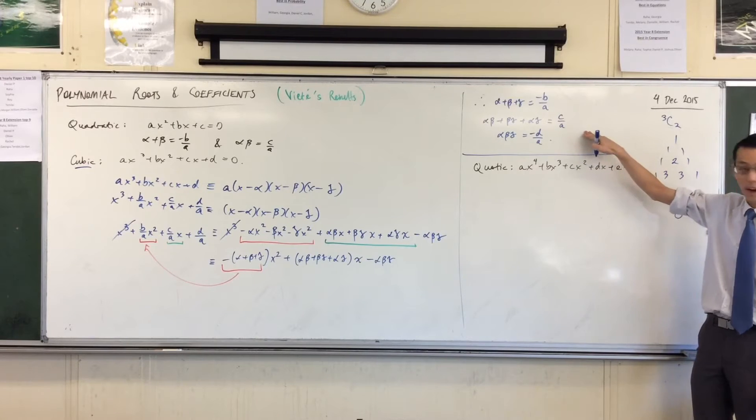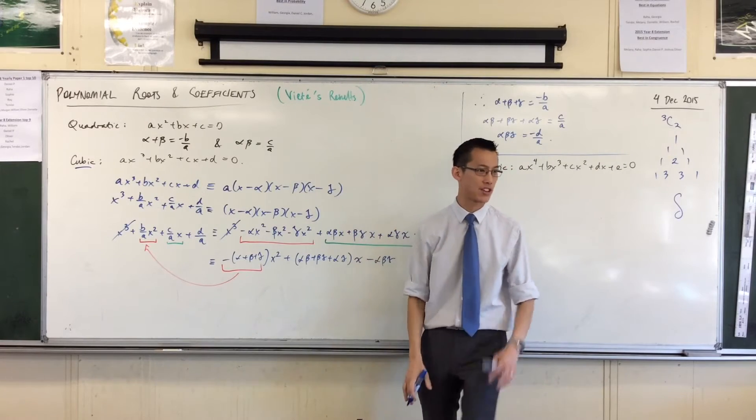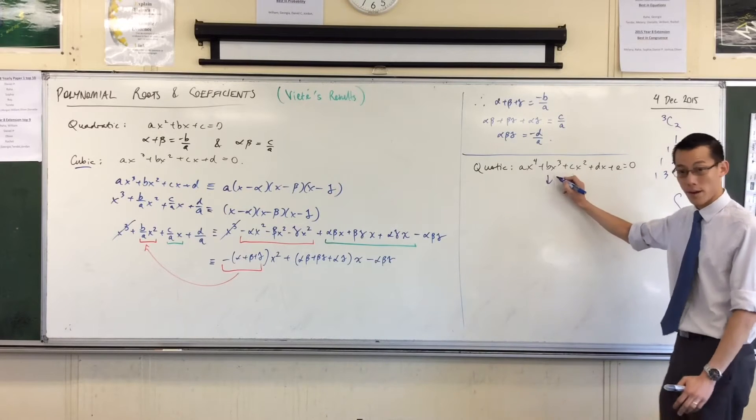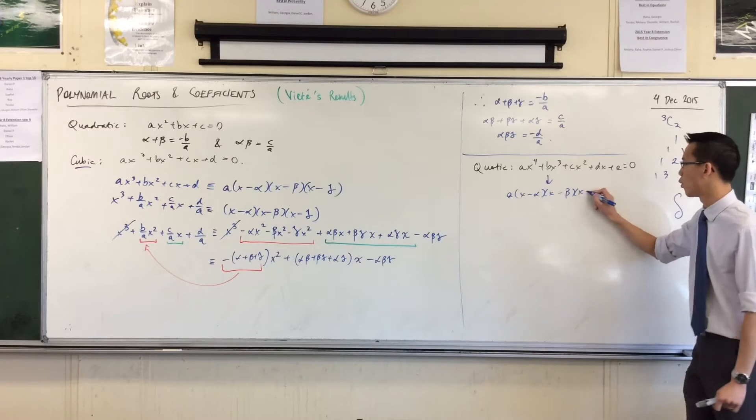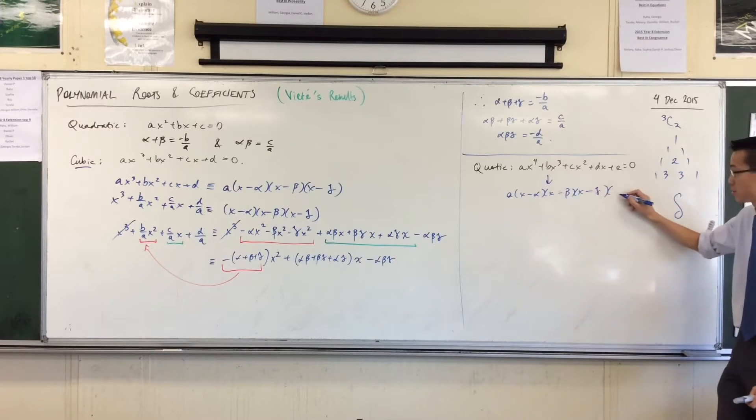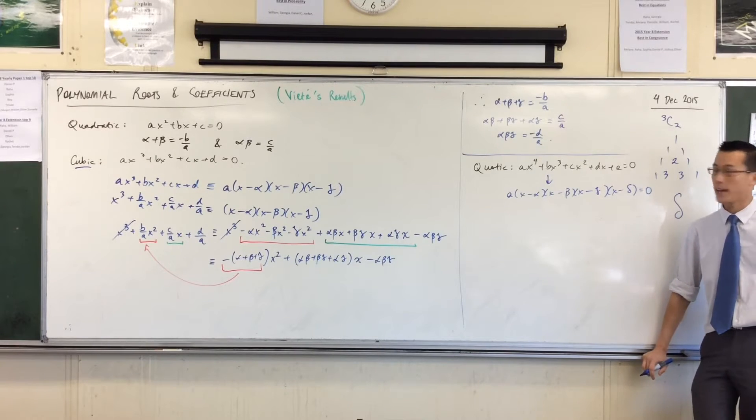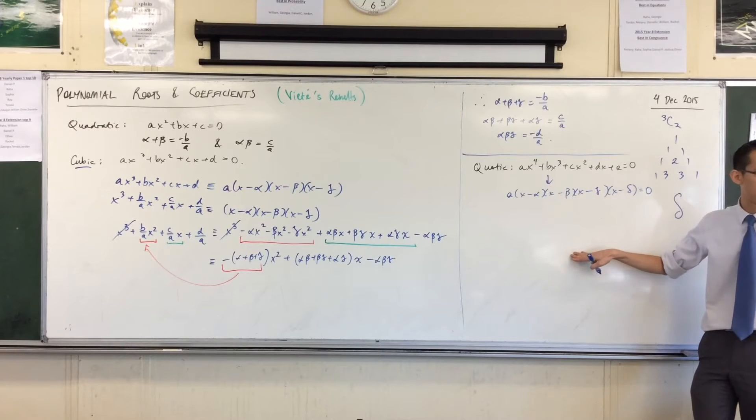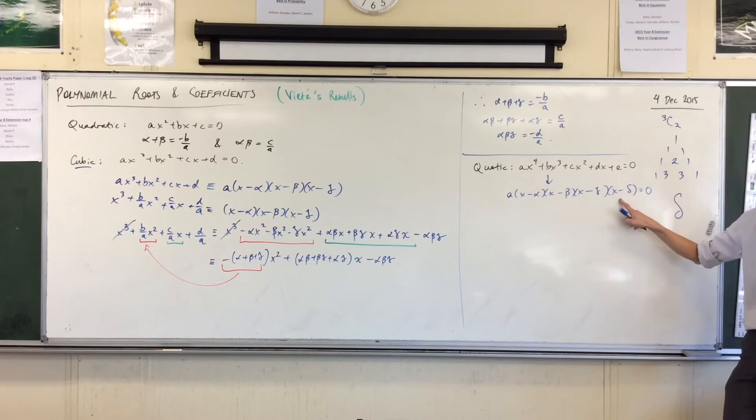When I add them all up, think about it this way. I'm going to write this first step here, but I'm not going to do any of the expansion. I'll see if you can follow the argument. If this thing should be equivalent to a times, let's put the 4 roots in here. So this is the 4 linear factors that I should be getting.